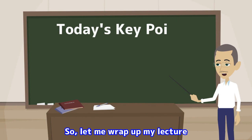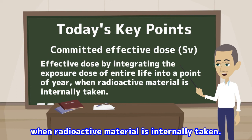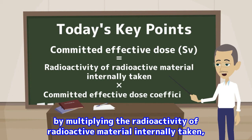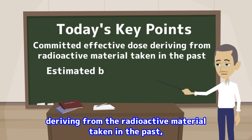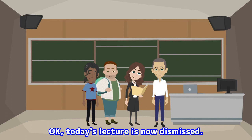Let me wrap up this lecture by providing the key points. The committed effective dose is the effective dose calculated by integrating the exposure dose of an entire life into the point of the year when radioactive material is internally taken. It is calculated by multiplying the radioactivity of radioactive material internally taken by the committed effective dose coefficient. In addition, the committed effective dose deriving from radioactive material taken in the past can be estimated by measuring from outside the body using a whole body counter, or by bioassay including analysing urine.